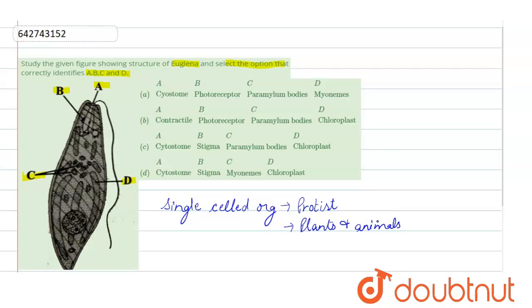When we talk about the options given to us, let's get back into the first option which says A part. Now what is A part? The A part is basically the cytostome. The first option is cytostome.